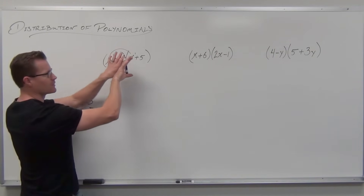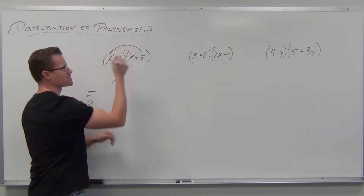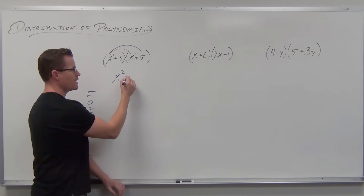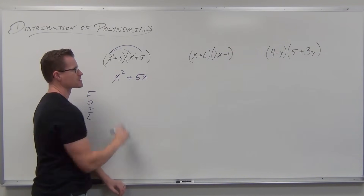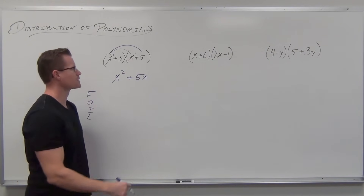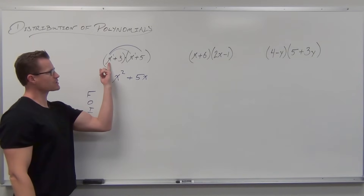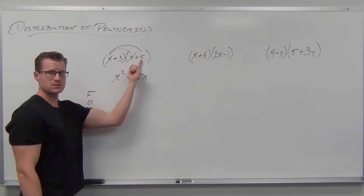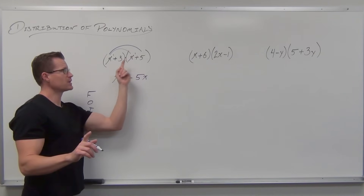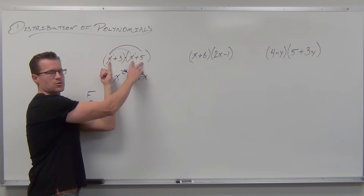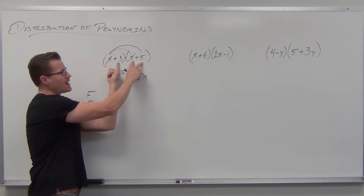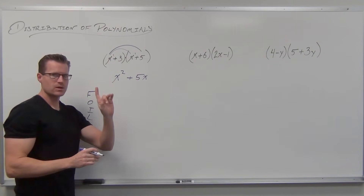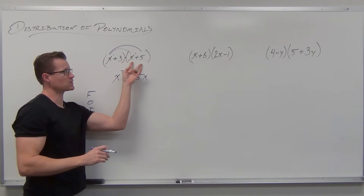Now, Outside means looking at the outside of your problem. What's x to the first times 5? Let your numbers multiply together and let your exponent rules take over for your variables — that would be 5x, so we put plus 5x. Notice that's taken this first term and multiplied it to both of these terms. We're basically halfway done, because for every term here, we multiply to every term here — that gives us two terms.